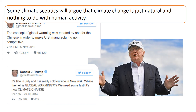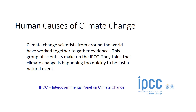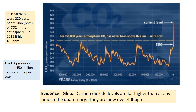Some climate skeptics will use this kind of evidence to argue that climate change is just a natural phenomenon with nothing to do with human activity. So what is the evidence that humans are causing climate change? Climate scientists from around the world work together in a group called the IPCC. They concluded that climate change is happening far too quickly to just be a natural event. This graph shows CO2 over the last 400,000 years — it has fluctuated, but since 1950 it has been dramatically increasing to over 400 parts per million as of 2015, far higher than at any other time in Earth's history. Only human activity can explain that.